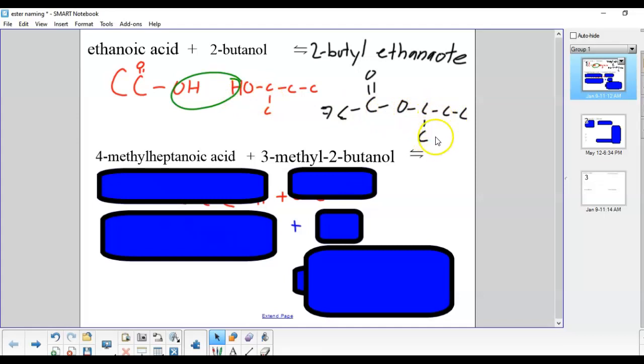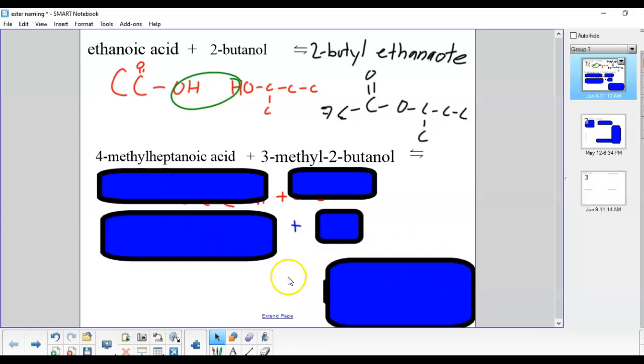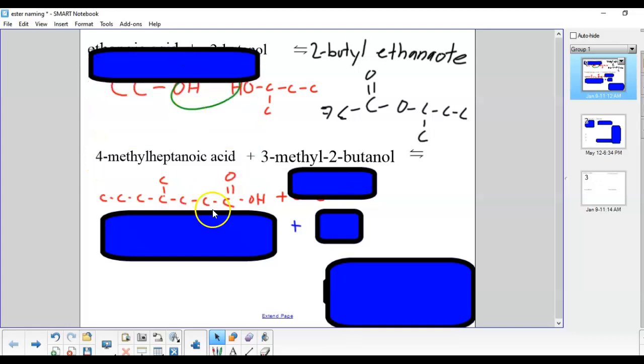Here's another example: 4-methylheptanoic acid. Again, we saw in the last lecture hept is seven and we have a methyl group coming off of carbon four. Plus 3-methyl-2-butanol. Again, four carbons long because it's but, it's an alcohol because we have an ol. That OH comes off of carbon two and we have a methyl group coming off of carbon three.